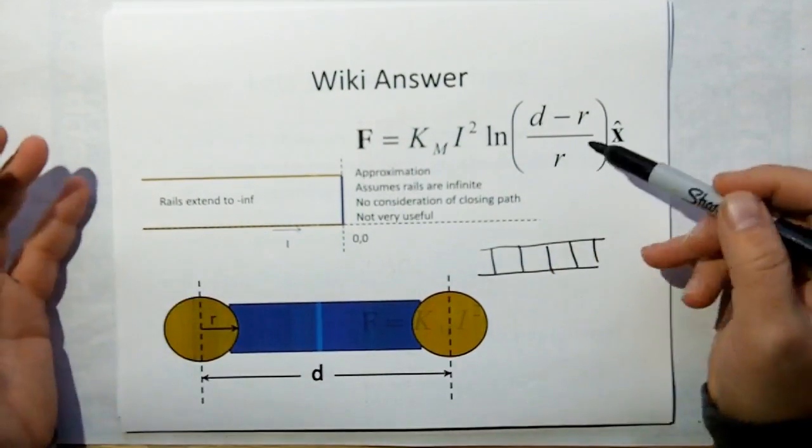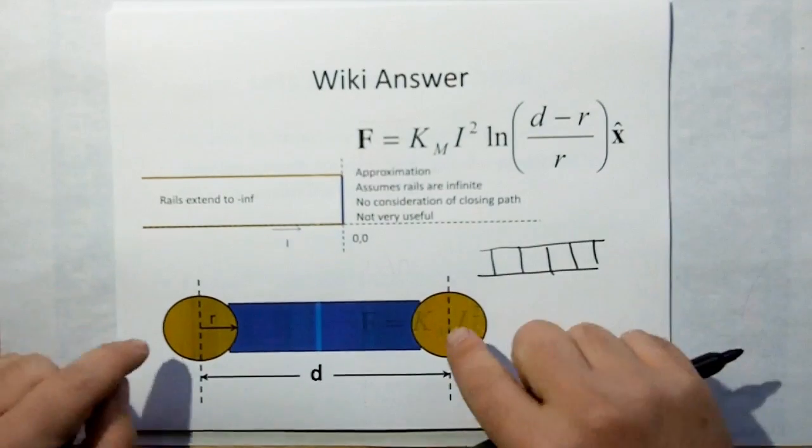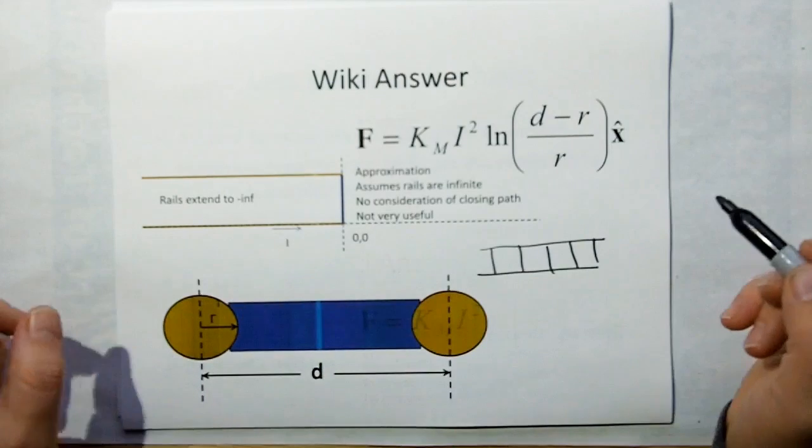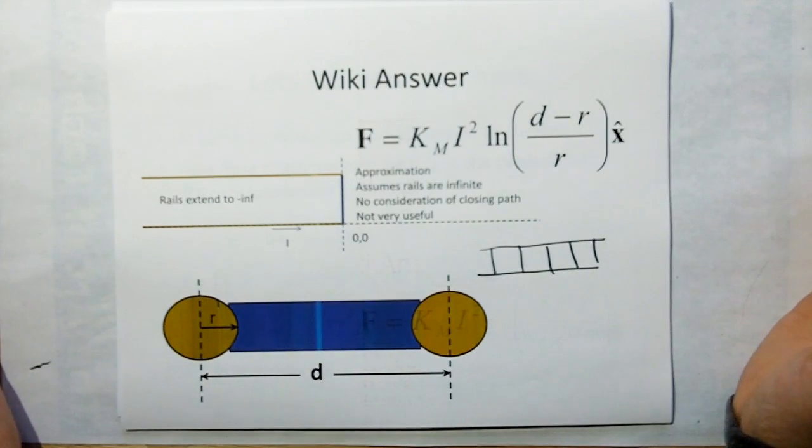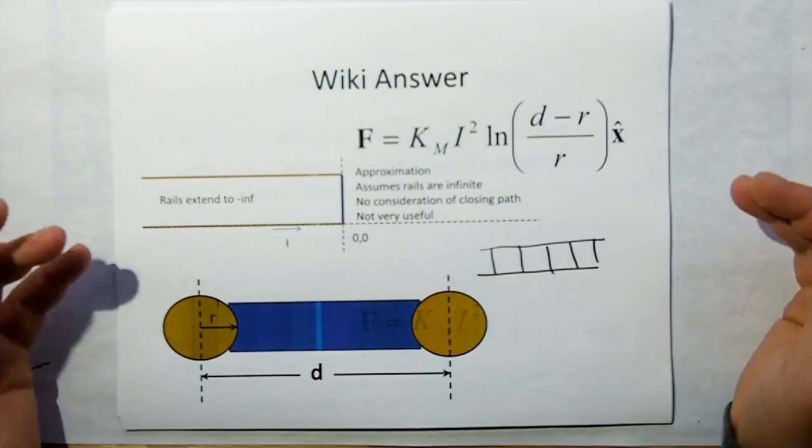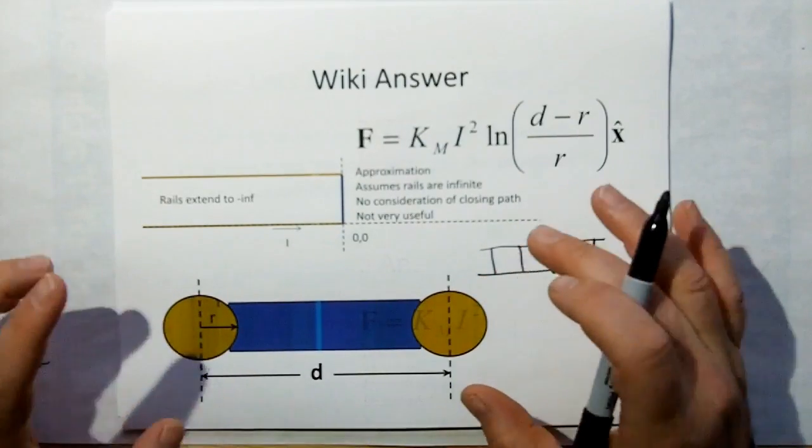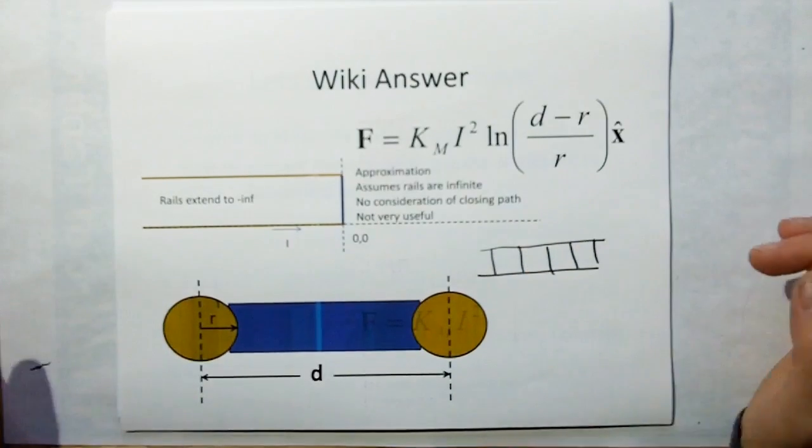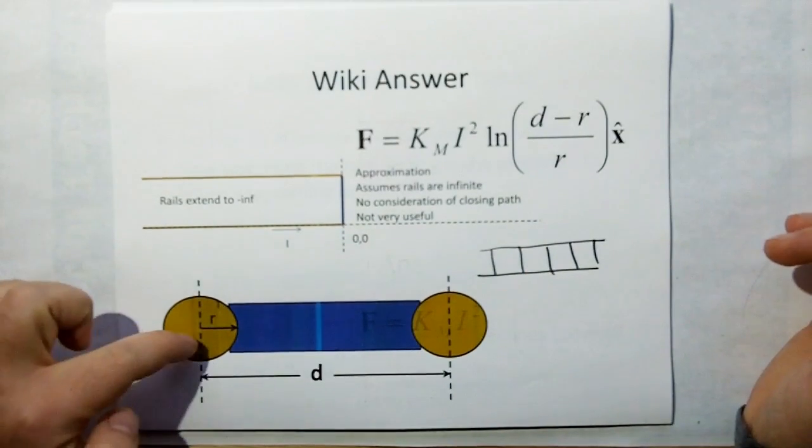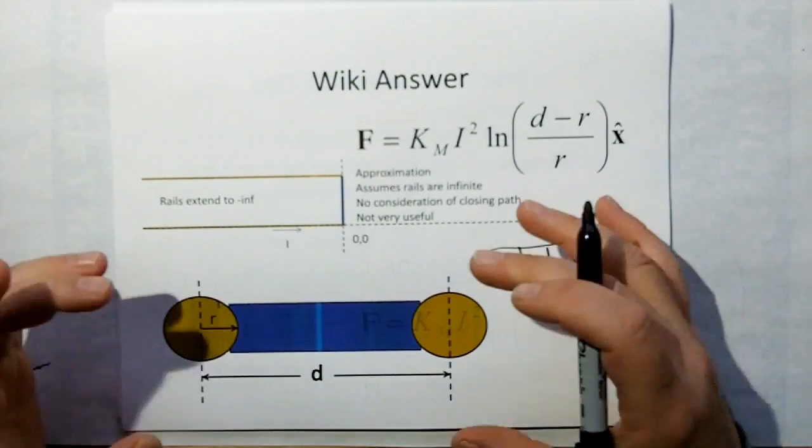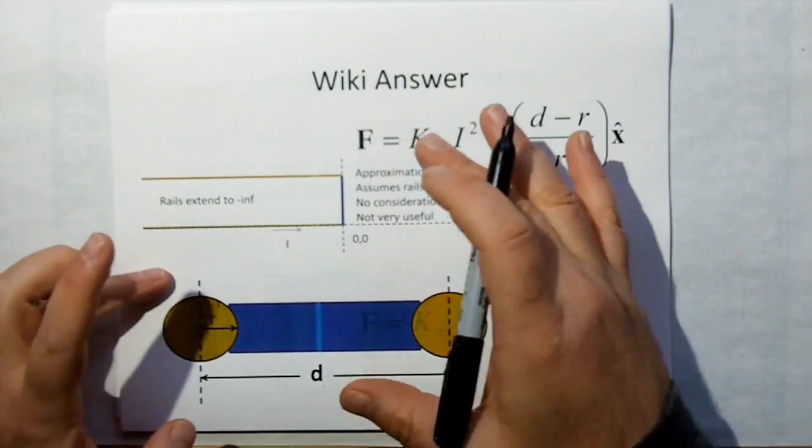And so this is the equation they use. D is the distance between the rails. R is the thickness of the rail, or the radius of the rail. And you can see right off the bat that in order for this railgun to be useful, you've got to put hundreds or thousands of amps through here. So you're not going to be using a very small rail. And the bigger your rail is, the smaller the force is. The size of the rails is inversely proportional to the force you get.